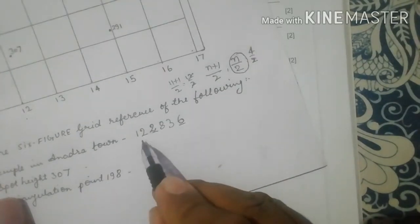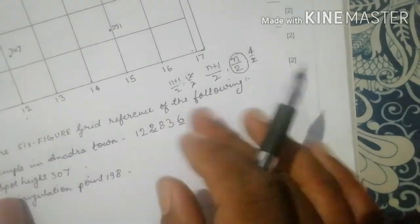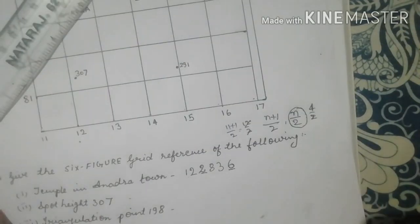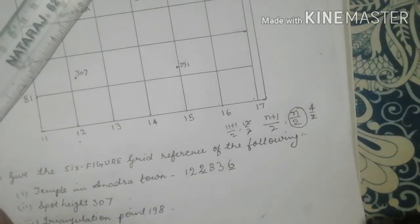The only thing you need to keep in mind is in which grid square they are lying. The two vertical lines, the two horizontal lines, take the value of the lesser one, write down the four-figure first, take the scale.